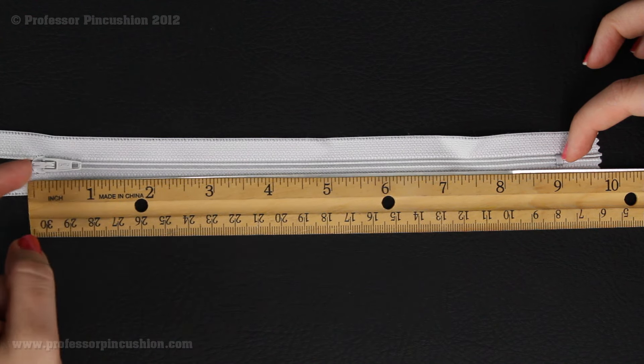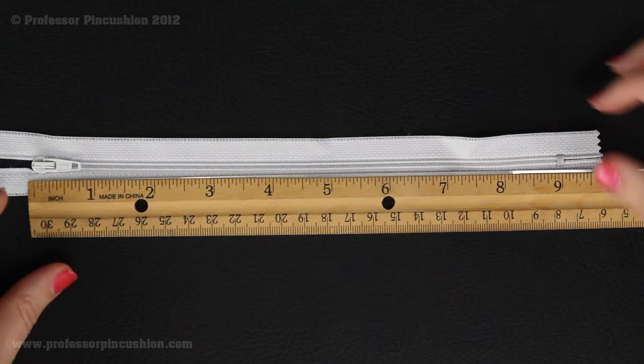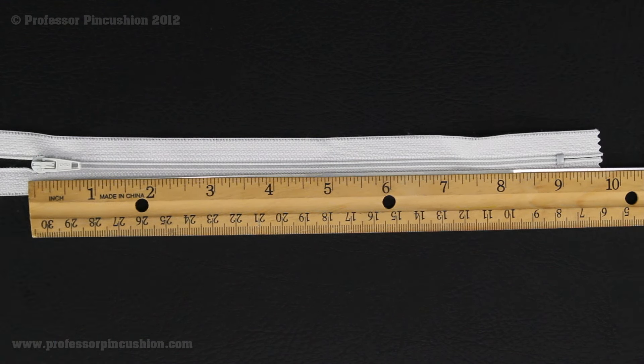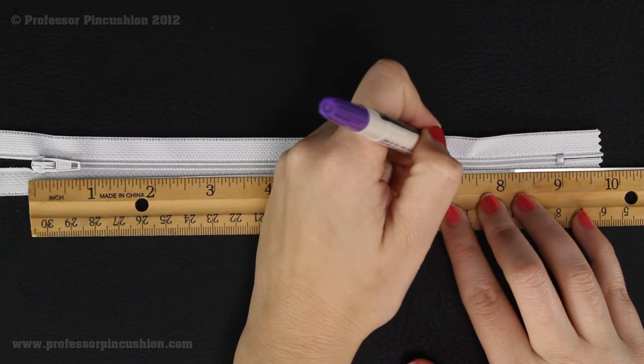So I have my zipper all the way zipped up with my zipper tab at the top, and this is a 9-inch. I'm going to grab my fabric marker, and whatever you decide to shorten it, that's what you're going to mark. So I'm going to do 7 inches.